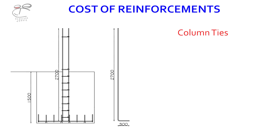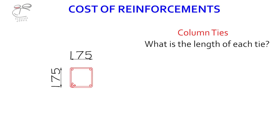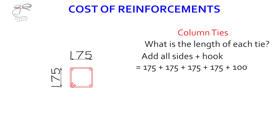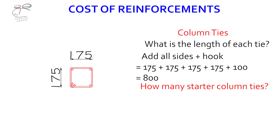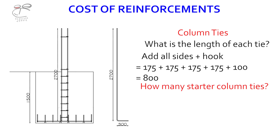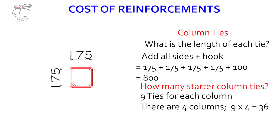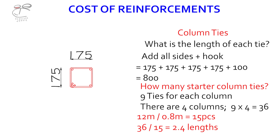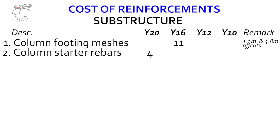For column ties, we reference the structural drawing for the column size, add all sides and hook — that gives 0.8 meters per tie. We have about 9 ties for each column and there are four columns, so 9 times 4 equals 36 ties. Dividing the 12-meter rod by 0.8 meters gives 15 pieces per rod. 36 divided by 15 gives 2.4 lengths, roughly 3 lengths of Y10 for the column starter ties, with a 7.2-meter off-cut from the Y10.